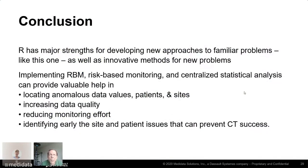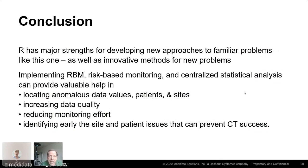In conclusion, R has major strengths for developing new approaches to familiar problems like this one, as well as innovative methods for new problems. Implementing risk-based monitoring and centralized statistical analysis can provide valuable help in locating data anomalies in data values, patients, and sites — increasing data quality, reducing monitoring effort, and identifying early issues at the site and patient level that can prevent clinical trial success.